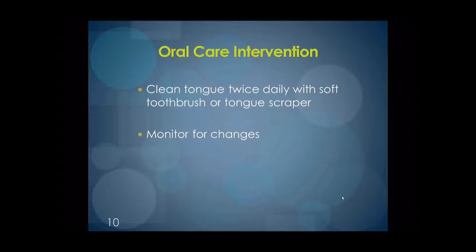The oral care intervention would be cleaning the tongue twice a day with a soft toothbrush or tongue scraper. Cleaning the tongue is just as important as cleaning the teeth, but more likely to stimulate the gag reflex. As a tip, you can place the toothbrush across the tongue and ask the resident to press their tongue against the brush and move it in and out of the mouth, which sometimes tricks the gag reflex as it puts the tongue in control of the movement.